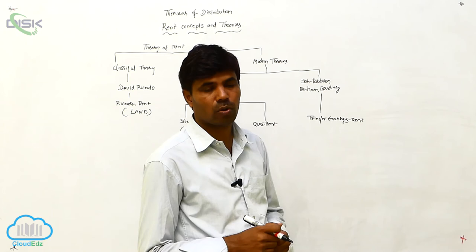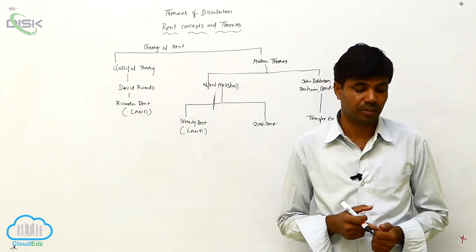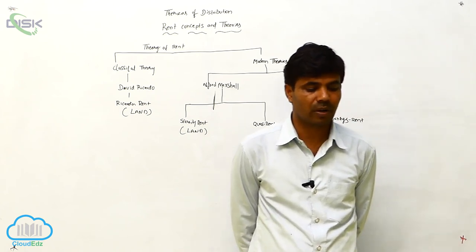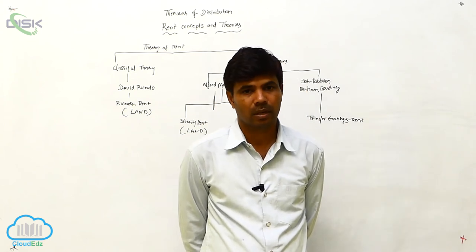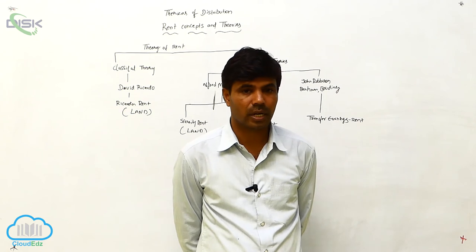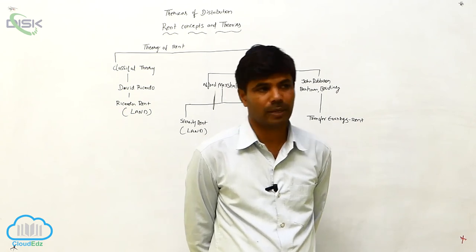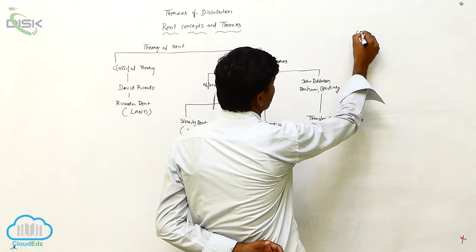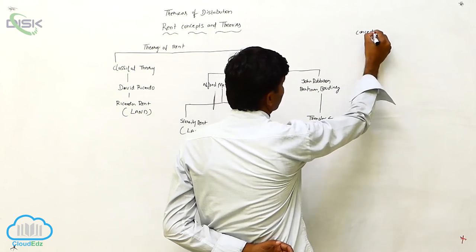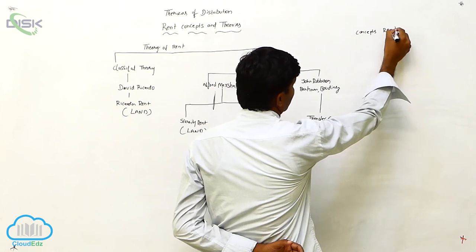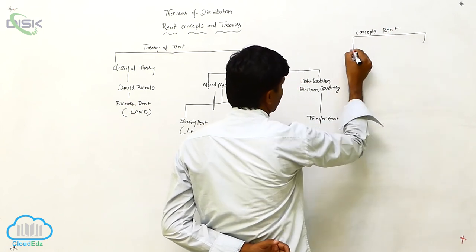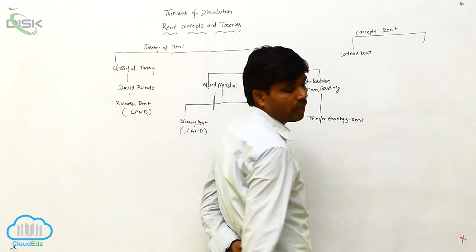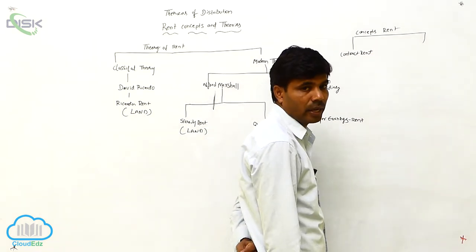Now we are going to discuss the concept of rent. What do you mean by the concept of rent? The concept of rent can be broadly divided into two types: first, contract rent, and second, economic rent.